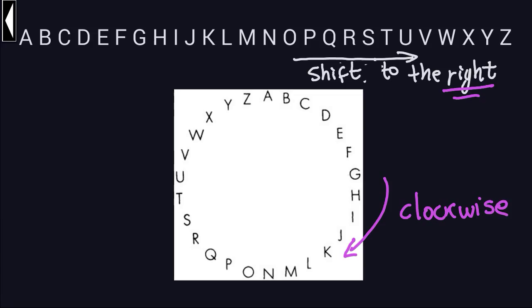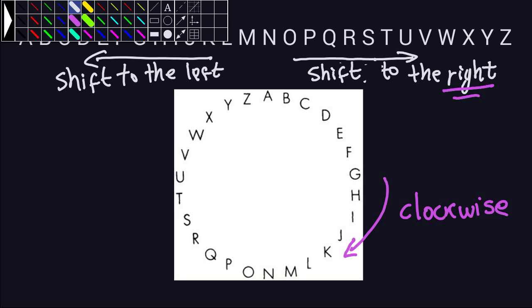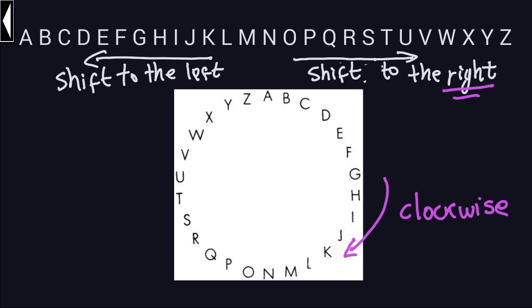Now we can also move to the left in the linear arrangement of letters. So you can also shift to the left, and that's what we used to encrypt the messages. That kind of shift to the left will correspond to moving in this circular arrangement counterclockwise, so moving in this direction.